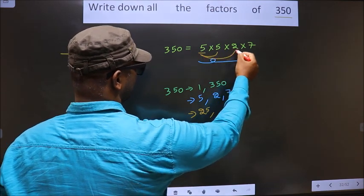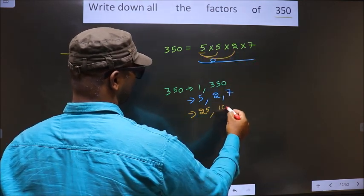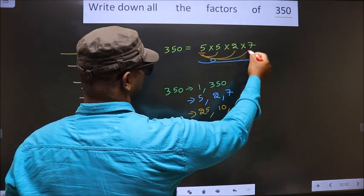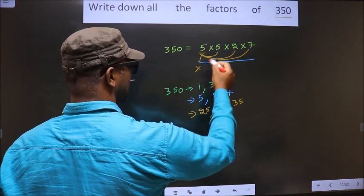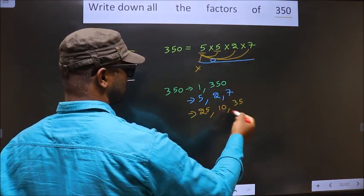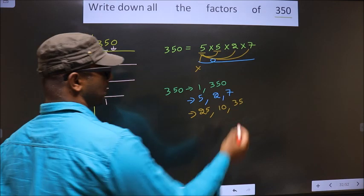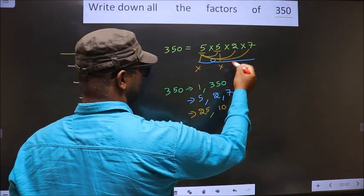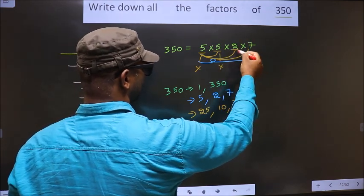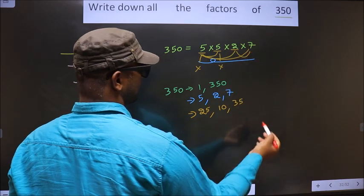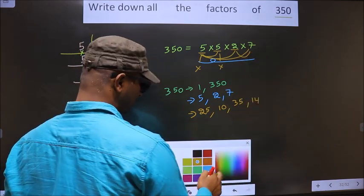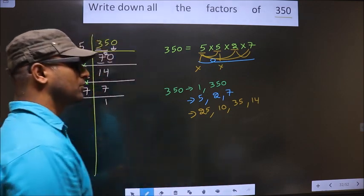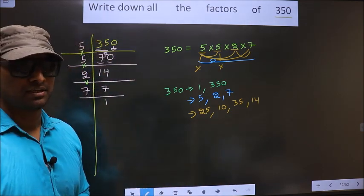Now I combine with 2. 5 into 2 is 10. Now I combine with 7. 5 into 7 is 35. Now you leave this 5, take this 5 and combine, you still get the same numbers. So leave this 5 also. Now fix the 2 and combine with 7. 2 into 7 is 14. No more combinations possible. Next.